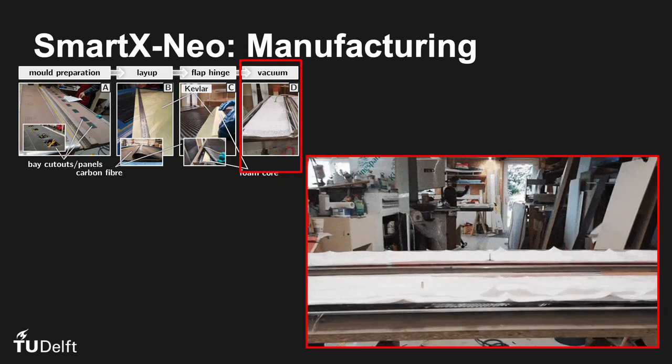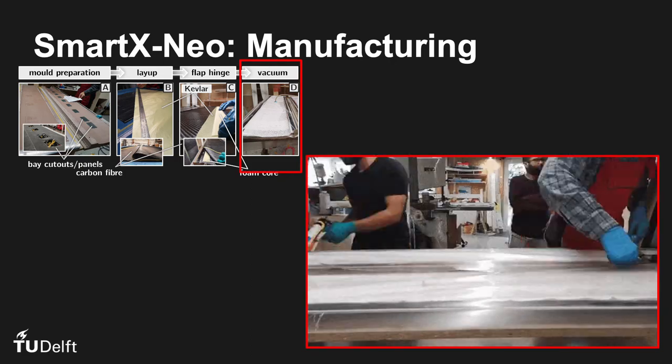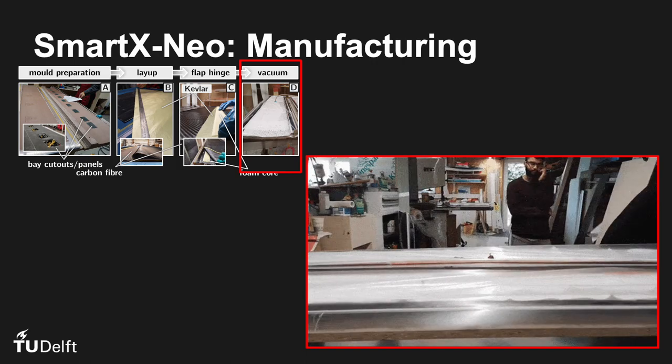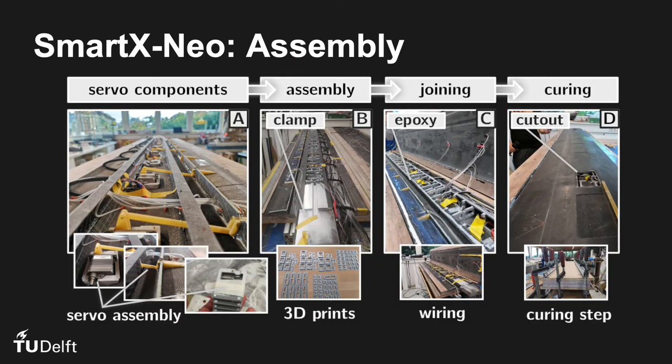Then a standard vacuum bagging process follows this. The assembly process was reasonably challenging due to numerous wing components and instrumentation involved during the integration.